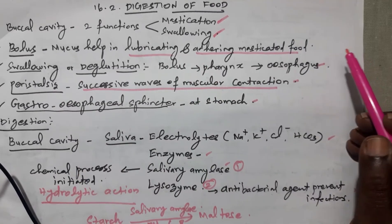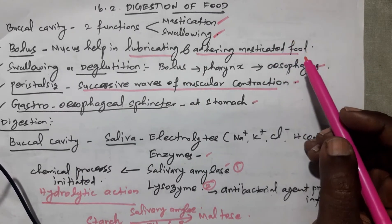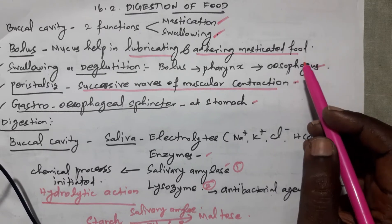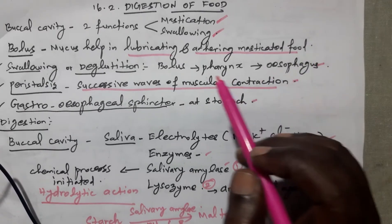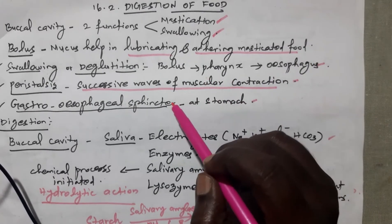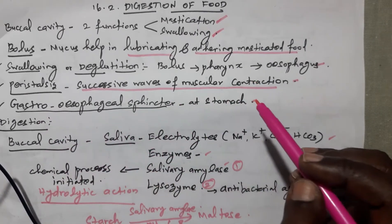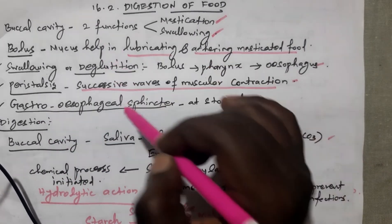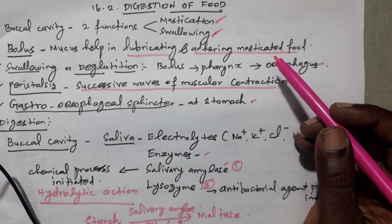The esophagus and stomach are connected by a sphincter between them, called the gastroesophageal sphincter. This is important terminology. Next, we take up the digestion activity.